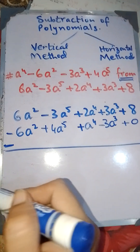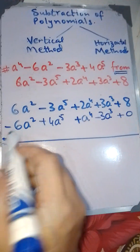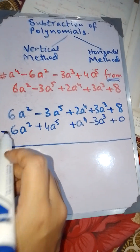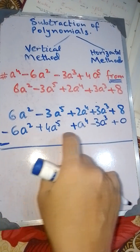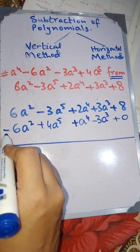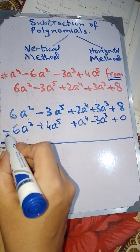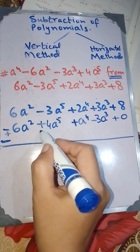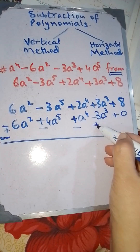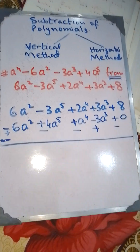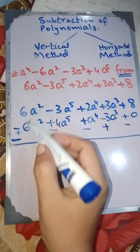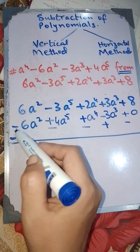The second important thing to keep in mind is that you are going to put a minus sign, which will change the whole sign of the last expression written. The minus sign will change everything: minus becomes plus, plus becomes minus, plus becomes minus, negative becomes positive. No change where there is nothing.